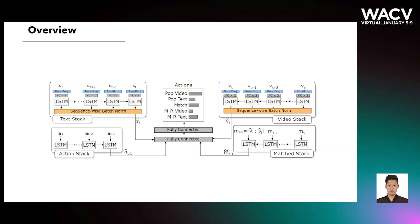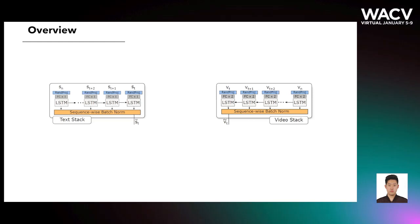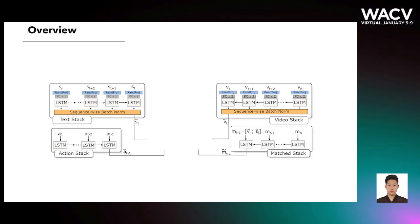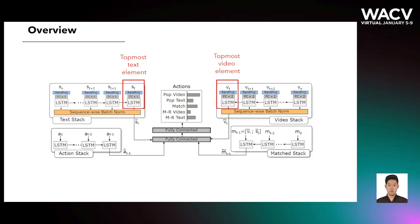We adopt an end-to-end differentiable network architecture called NewMatch. It consists of four stacks. Two of them, VideoStack and TextStack, encode their elements to be aligned. ActionStack and MatchStack capture historical information. The basic procedure of this network is to determine if the topmost video element and the topmost text element should be matched. If not, one of them should be removed. This process repeats until one of the sequences is exhausted.